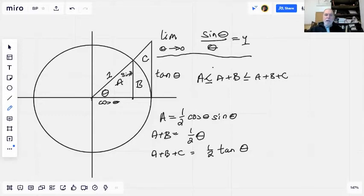and a plus b plus c again is one half of the base, which is just one so I didn't include it, times the height which is tan theta.